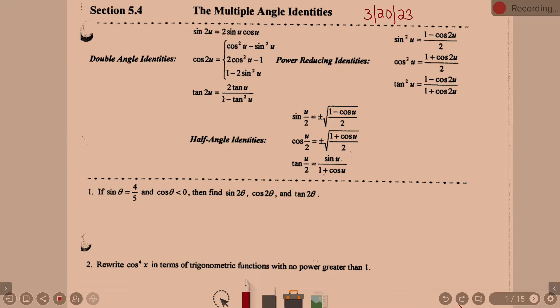Lesson 5.4 brings on, guess what? More identities. Okay, so three new sets of identities to add on. And so you see here we have double angle identities, power reducing identities, and half angle identities. And so we're going to practice different ways we can use those.